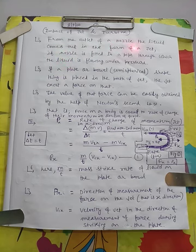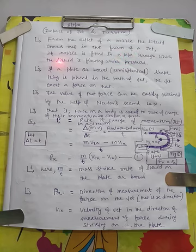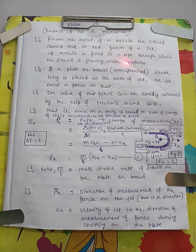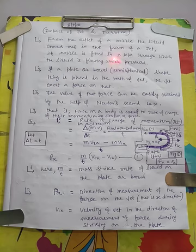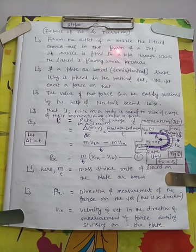From the outlet of a nozzle, the liquid comes out in the form of a jet when a nozzle is fitted to a pipe through which the liquid is flowing under pressure. When a nozzle is fitted at the end of a pipe and water is flowing with pressure — the pipe full of pressure — then through the nozzle the water will come out in the form of a jet. A very high velocity water jet will come out from the nozzle.